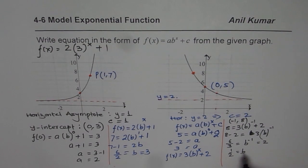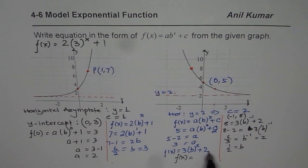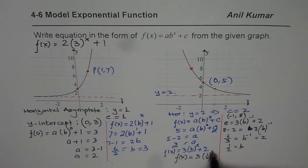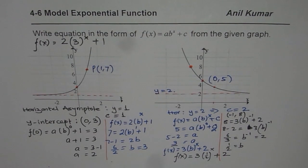Now we can write our function: f(x) = 3·(1/2)^x + 2. That is how you can get the equation of an exponential function from a graph. The critical points to check are: the horizontal asymptote, the y-intercept, and points on either side of the y-intercept. I hope that helps. Thank you and all the best.